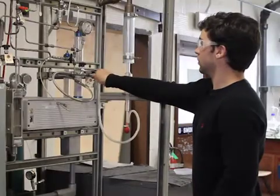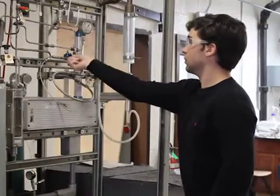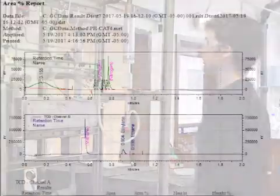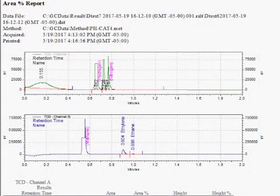Next, check the reactant composition by flowing the reactants through the reactor bypass and into the gas chromatograph inlet port.